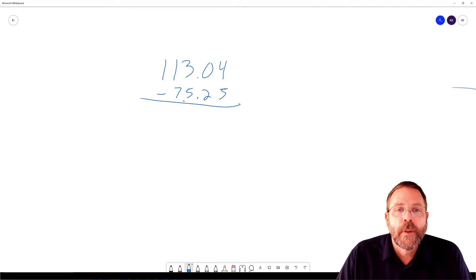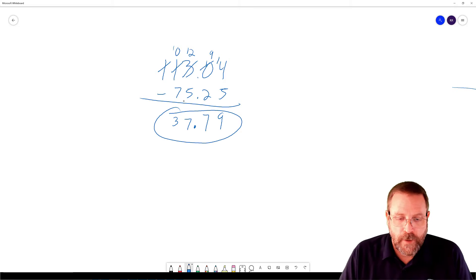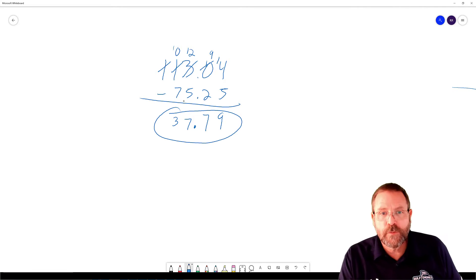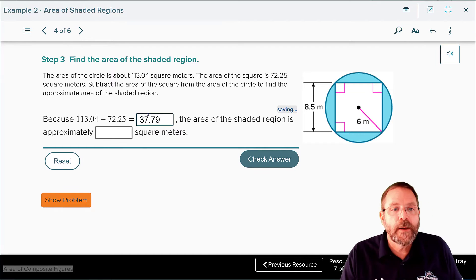I'm going to do some borrowing here. Let's knock that one down to a 2 which would make that a 10, but that 10 is going to become a 9 making that a 14. 14 minus 5 is 9, 9 minus 2 is 7. Your decimal comes down. We've got to borrow some more, a 0 and a 12. 12 minus 5, that's going to end up giving me 7. And now I need to borrow one more time. 10 minus 7, that's going to give me 3. So the area of the shaded region should be 37.79.